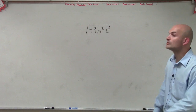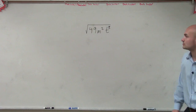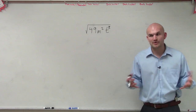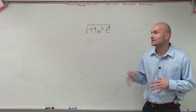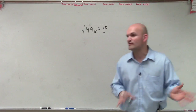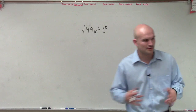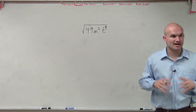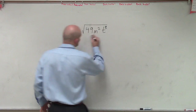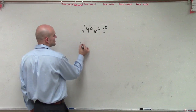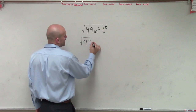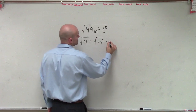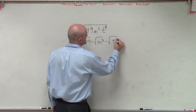So right now, what I have is the square root of 49 m squared t to the eighth. Now remember, the main important thing — this was actually page 90, number 12. It wasn't part of your homework, but I'm just going to go over it as a little bit of a review. So remember, the first thing we like to do is try to break this up. Since we have a product, we can break this up into the square root of 49 times the square root of m squared times the square root of t to the eighth.